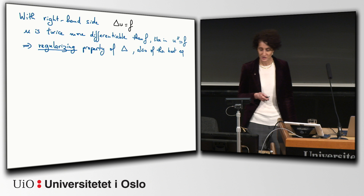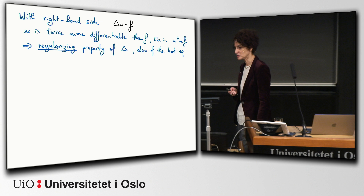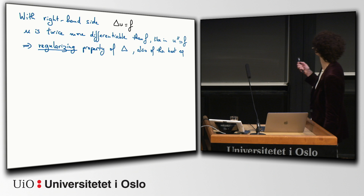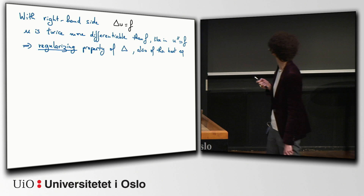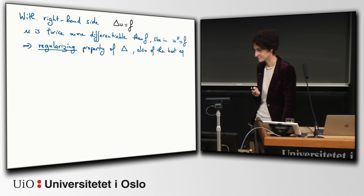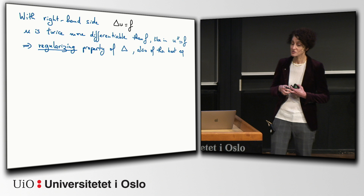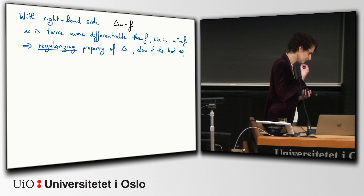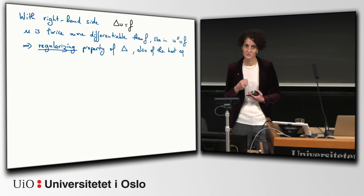If you think of the equation with a right-hand side, Laplacian U equals F, what happens is that U turns out to be twice more differentiable than F — so it depends on the right-hand side. The model is the ODE situation in 1D, where you have U'' equals F. In 1D it's obvious: you can just integrate once and twice, and you see that U has two orders of differentiability more than F. What is remarkable is that in higher dimension this property persists with Laplacian, even though the Laplacian only controls a certain combination of the second derivatives. But this combination is very particular, and the ellipticity of the operator plays the crucial role here.